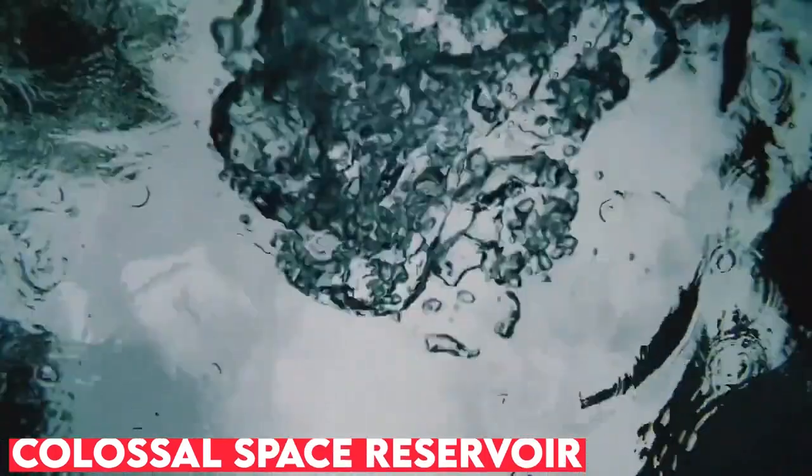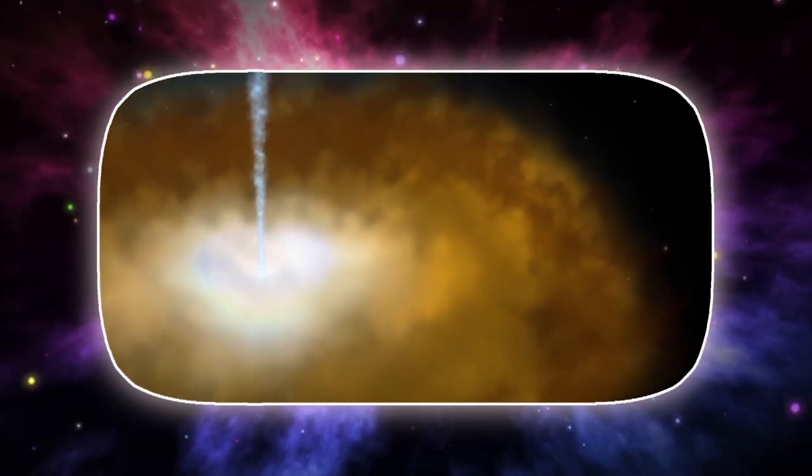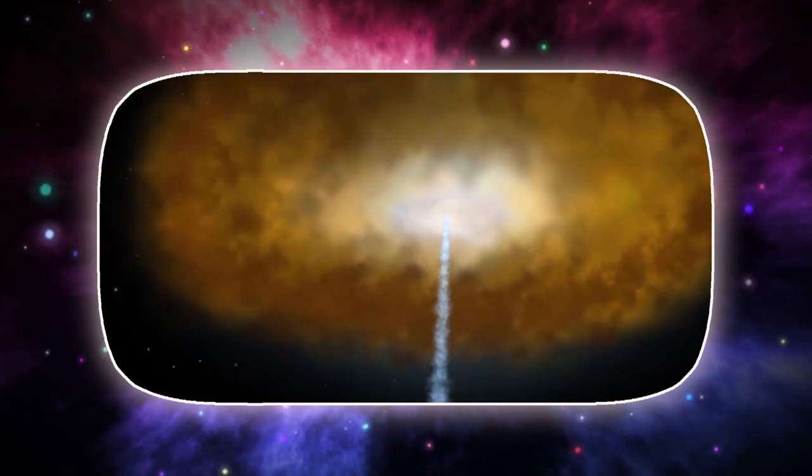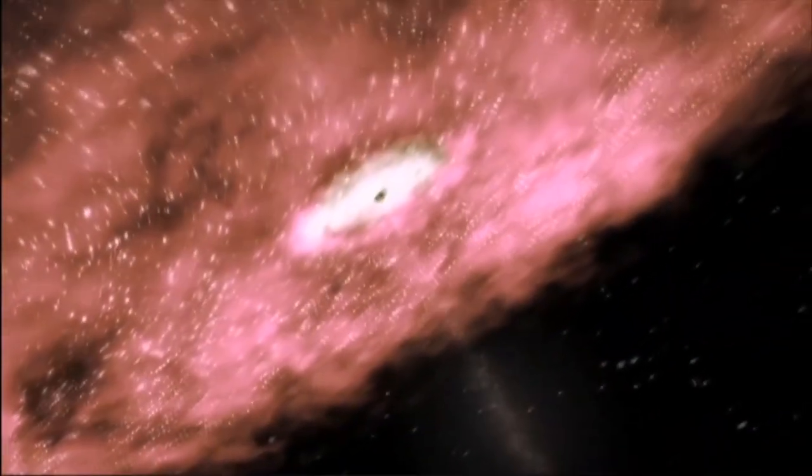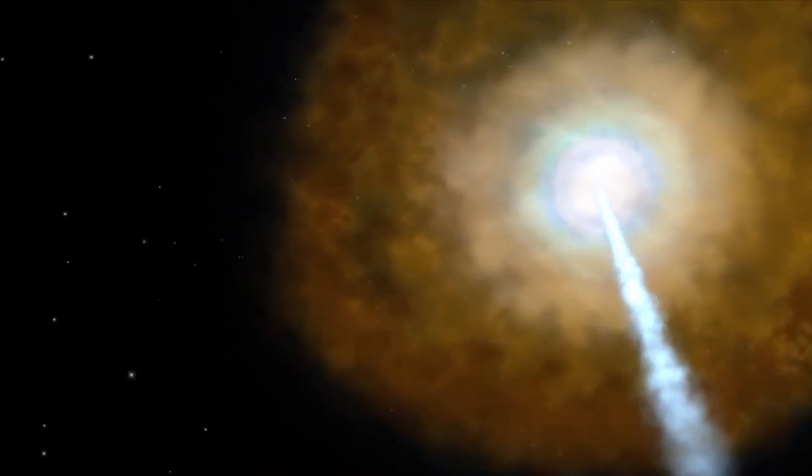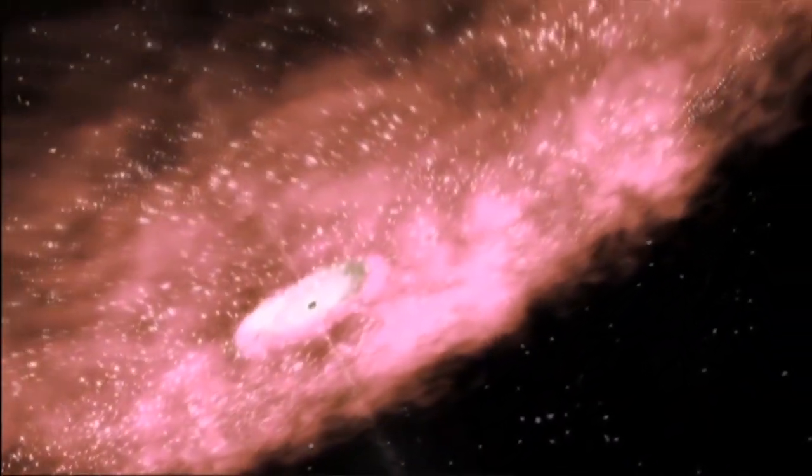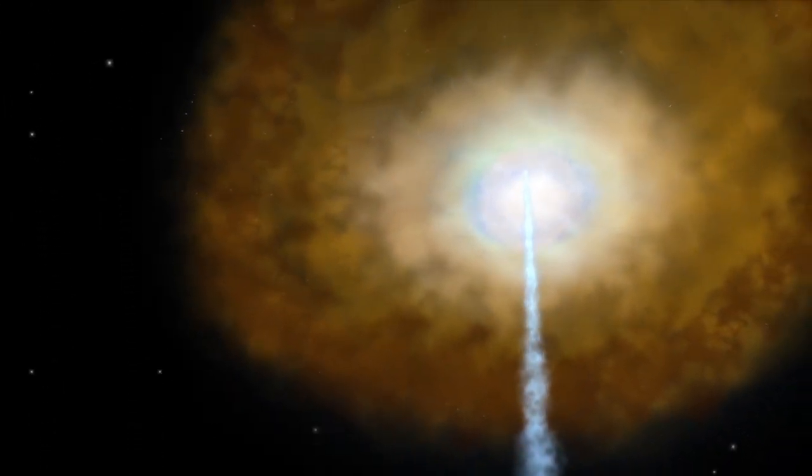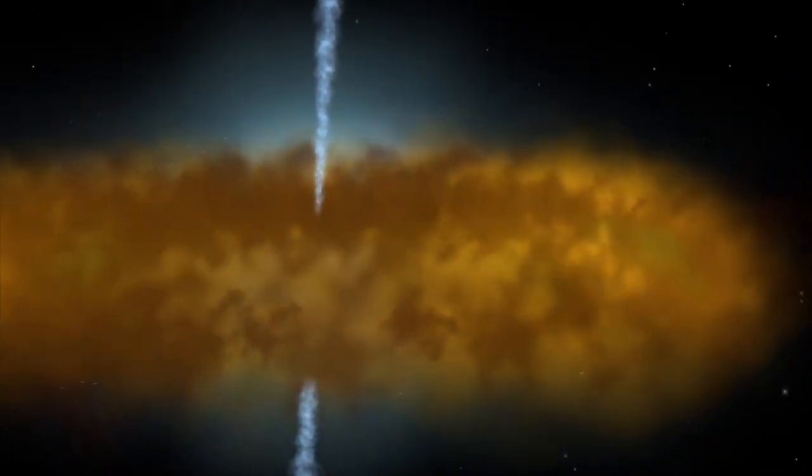Next is a colossal space reservoir. A quasar may be found 12 billion light-years distant. A black hole, 20 billion times the mass of our sun, resides within this quasar. The black hole belches out as much energy as 1,000 trillion suns as a by-product of its food, consuming inconceivable amounts of dust and gas. A massive reservoir of genuine water vapor, storing around 140 trillion times the amount of water in all of the Earth's seas, is one expression of all that chemistry. That's stunning and horrifying all at the same time.